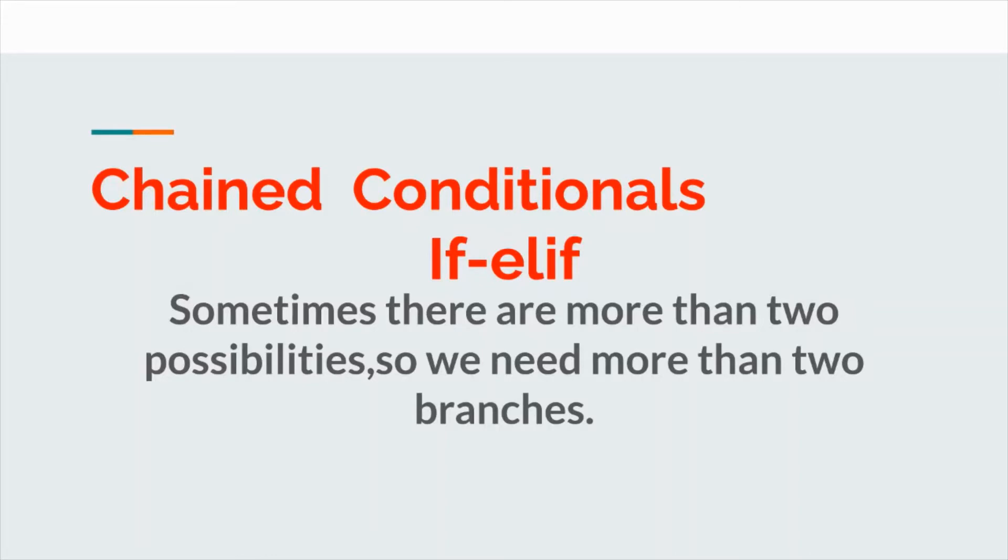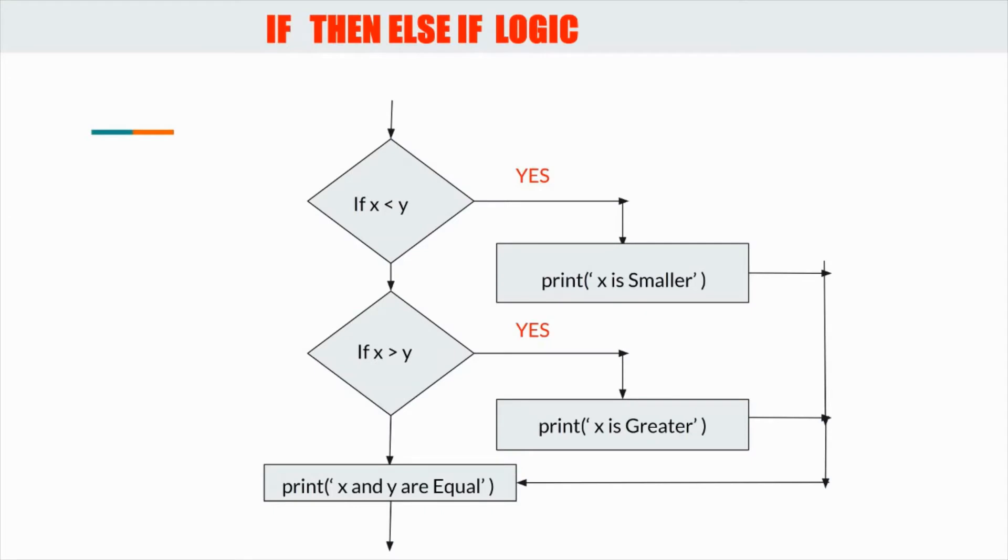In if else we have seen that there were two possibilities, but what if there are more than two possibilities? In that case we will need more than two branches, more than two blocks. So this is the flow chart of if then elif. Elif is short form of else if.